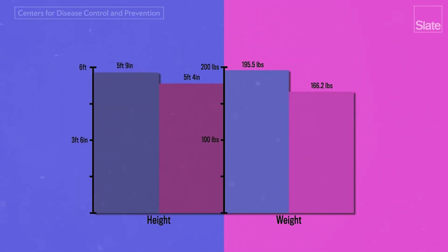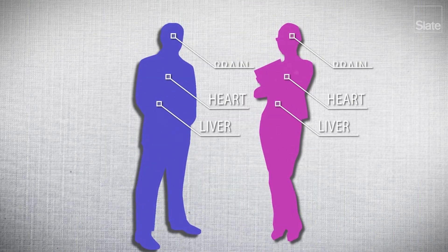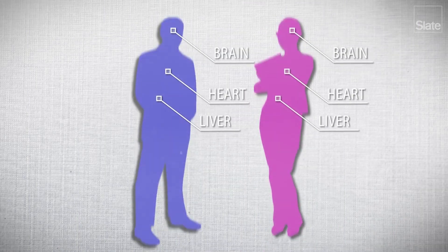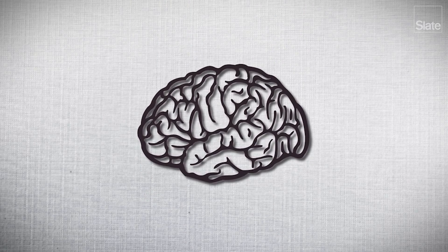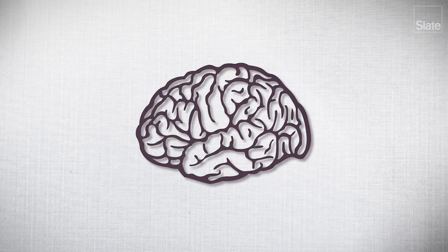people who identify as female are smaller than those who identify as male, so their organs, like their liver, heart, and yes, their brains, are smaller too. Smaller brains may process information differently, leading to distinctive patterns of connectivity or distributions of white and gray matter.